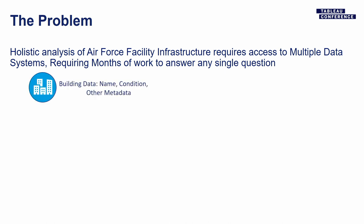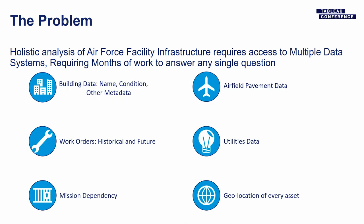What we had to do was holistic data analysis, and for simplicity I grouped it into six categories. The Air Force has a data set on their buildings — the metadata like building name, what it's used for, how big it is. Also, what actions are being taken on buildings — are they repairing things, how often, what are they repairing? How important is that asset to the Air Force mission? Some buildings are more important than others, and the Air Force has to take that into account. Then of course they care a lot about their airfield pavement data, utilities data, and understanding where all these assets are located around the world.